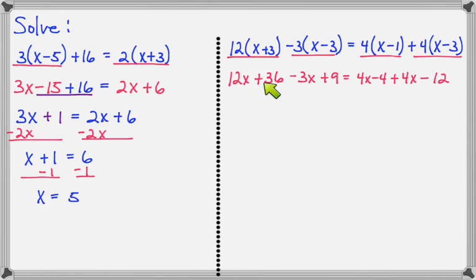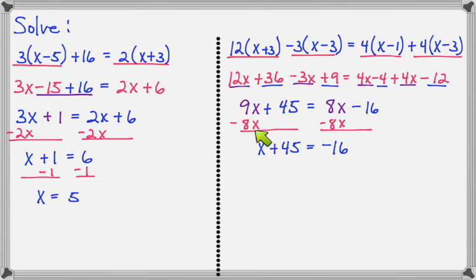Now look at the left side. I have two x terms and two constants that we will combine. 12x minus 3x makes 9x, and 36 plus 9 makes 45. On the right side, 4x plus 4x makes 8x, and negative 4 minus 12 makes minus 16. Then I have both kinds of terms on both sides of the equal mark, two different terms here, two different terms here. So I will find the smaller x term, which is this one, and we'll do minus 8x on both sides. Now 9x minus 8x is 1x plus 45, and then on the right side it all comes down to minus 16.